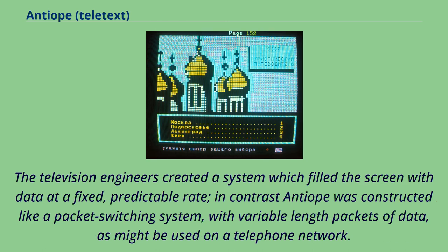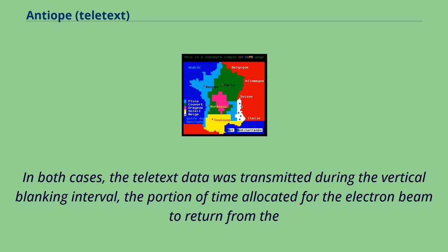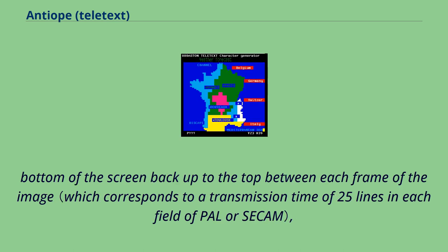The television engineers created a system which filled the screen with data at a fixed, predictable rate. In contrast, Antiope was constructed like a packet-switching system, with variable-length packets of data, as might be used on a telephone network. In both cases, the teletext data was transmitted during the vertical blanking interval — the portion of time allocated for the electron beam to return from the bottom of the screen back up to the top between each frame of the image.